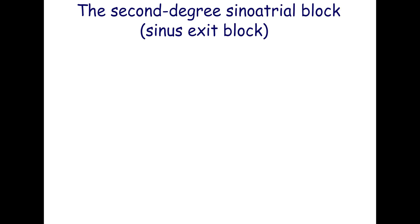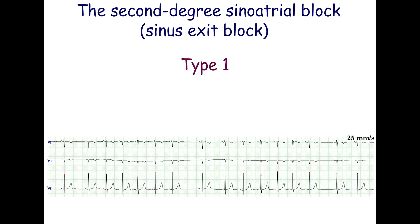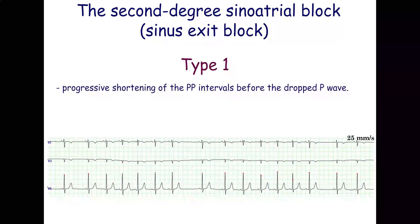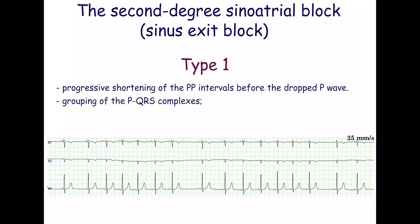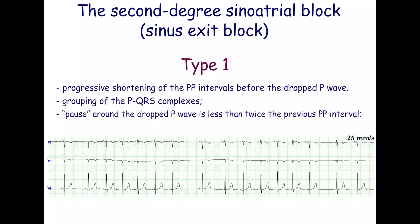There are two types of second-degree sinoatrial block, also called sinus exit block. Type 1 is characterized by progressive shortening of the P-P intervals before the dropped P-wave. There is a grouping of the PQRS complexes. The pause around the dropped P-wave is less than twice the previous P-P interval.